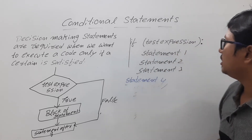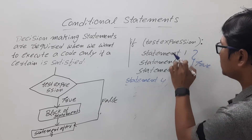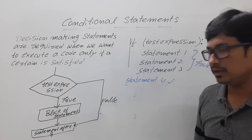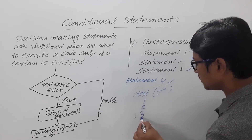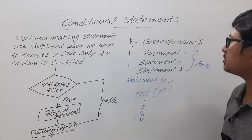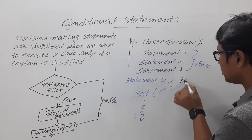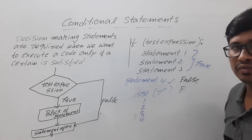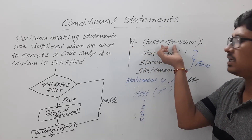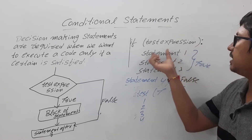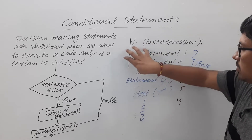If the test expression is true, statement 1, statement 2, statement 3, and statement 4 will all be executed. If the test expression is false, statements 1, 2, and 3 are skipped and only statement 4 is executed. So: keyword 'if', test expression, colon, press enter to start indentation, write the block of statements, then write statement 4 outside the indentation.